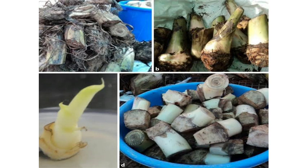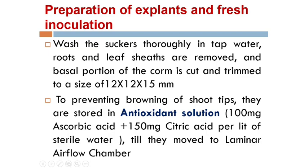Suckers are selected for explant collection. From the suckers, after washing with tap water, the shoot tip is collected. This is the exact shoot tip used as the explant in banana micropropagation. To prevent browning of the shoot tips, they are stored in an anti-oxidant solution — 100 mg of ascorbic acid and 150 mg of citric acid per liter of sterile water — to prevent oxidation until they are moved to the laminar airflow chamber for inoculation.